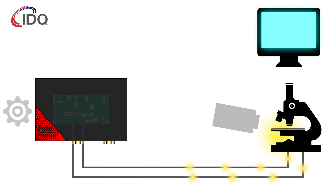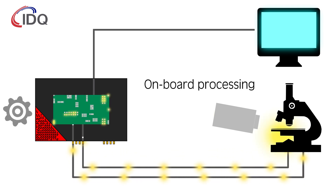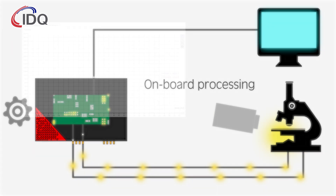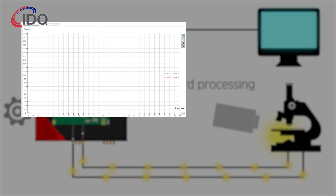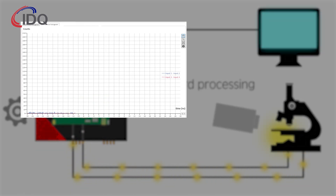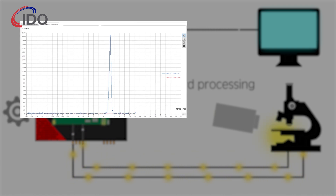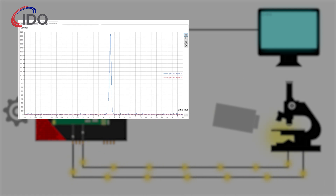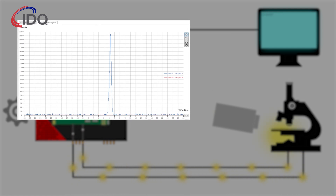The timestamps can be sent to a computer for analysis, or they can be directly processed inside the time controller. The built-in processing can construct histograms and identify up to four-fold coincidences before transferring this processed data to a computer.